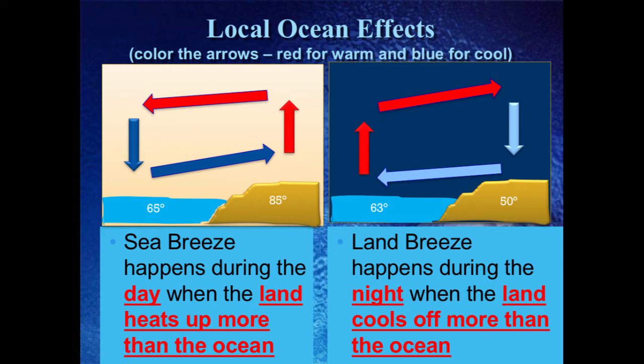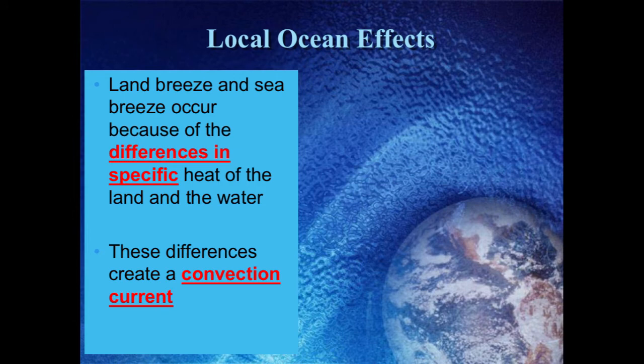This is why it is always windy on the coast: during the day the wind comes off the ocean, and at night the wind comes off the land. Make sure you understand the convection currents and the unequal heating because water has such a high specific heat. In your flip notes, draw and label both pictures. You are going to have a take-home test this week, and the better your notes, the better your grade. Land and sea breezes occur because of the specific heat difference between land and water, and those differences create the convection currents.